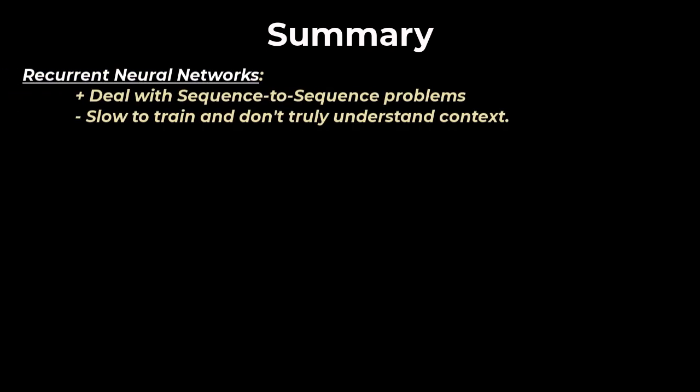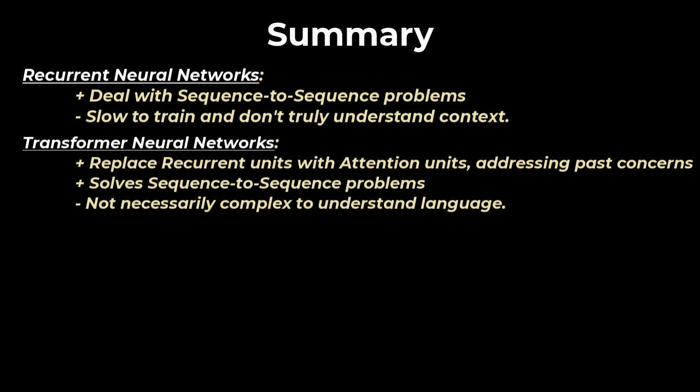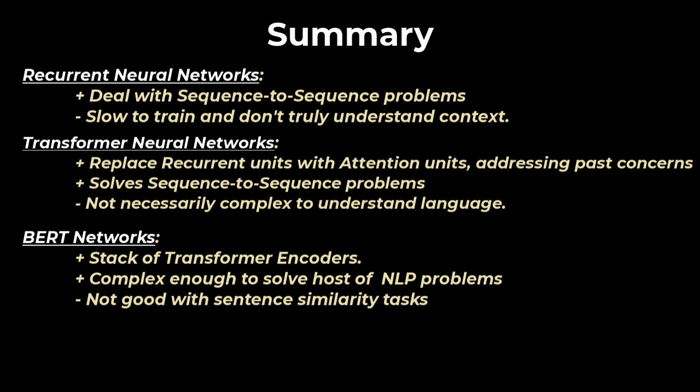All right, so this is a long video, so let's summarize what we've discussed. We started our discussion with recurrent neural networks and how they deal with sequence-to-sequence problems. However, they are slow to train and don't truly understand context, much because of recurrent units. Transformers replace the recurrent units with attention units, addressing both concerns. But transformers were designed to better solve sequence-to-sequence problems and not necessarily be complex enough to train a language model. BERT addresses this by stacking transformer encoders. Its increased complexity makes this network better at understanding word representations. And so we can use BERT to solve a host of natural language problems.